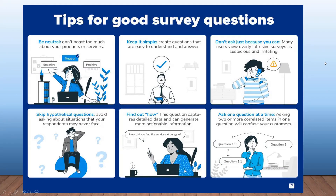Here are some tips for good survey questions. If you have to conduct surveys, you want to be neutral and keep it simple. Don't ask just because you can. You want to skip hypothetical questions. You want to find out how — for example, how did you find the services at the gym? And ask one question at a time — you don't want to confuse the respondent.